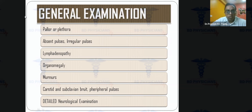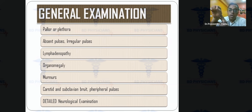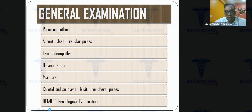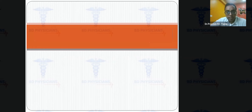General examination should assess for pallor or plethora, absent pulses (seen in Takayasu's) or irregular pulses (atrial fibrillation), lymphadenopathy, organomegaly, and cardiac murmurs. Fever with murmurs and pallor suggests infective endocarditis. Listen for carotid and subclavian bruits — in Takayasu's, bruits can be heard widely. Asymmetric pulses in both hands warrant careful bruit examination. Renal artery bruits should also be checked if Takayasu's is suspected, followed by a detailed neurological examination.